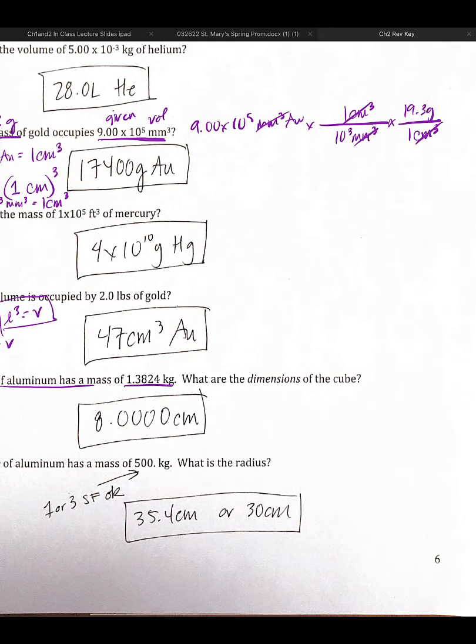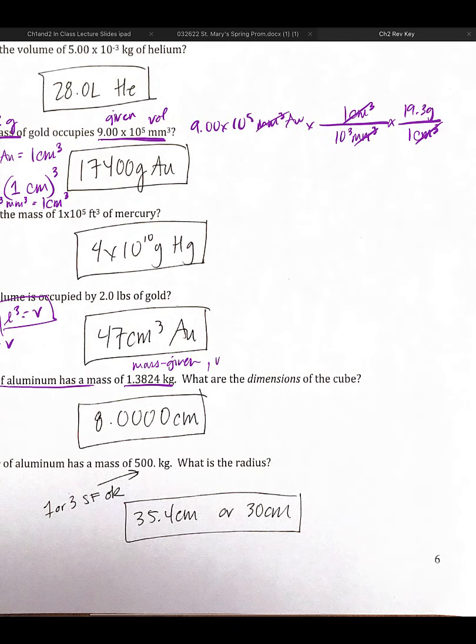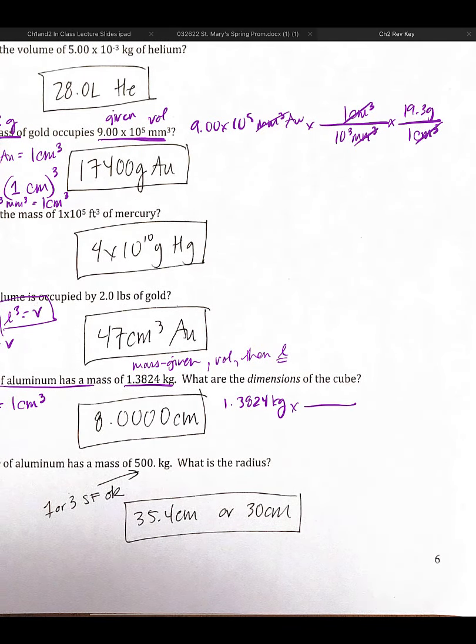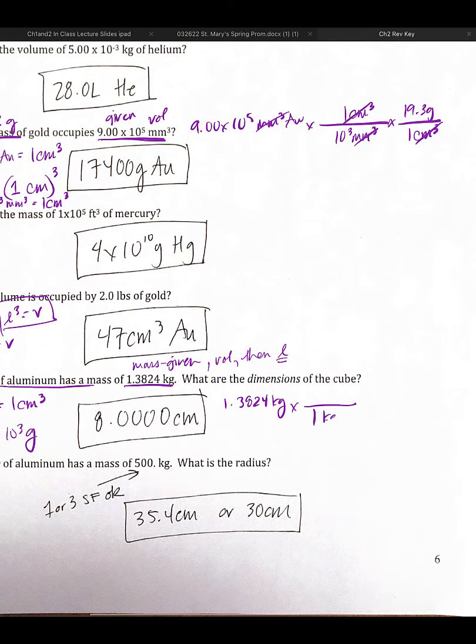So if I would like to know the dimensions, that means I'm going to start from my mass, which is my given, and then I'm just going to have to convert to volume first, and then dimensions, then my length. So we're going to start with our 1.3824 kilograms of aluminum. And then we'll go get the density, which says 2.7 grams are equal to 1 centimeter cubed, and then we'll go ahead and do our work. Ah, kilograms, you got to turn that into grams, so let's write that one down. 1 kilogram are equal to 10³ grams.